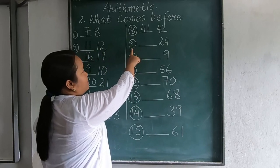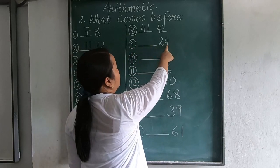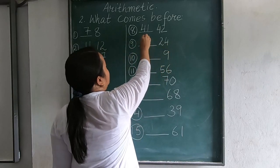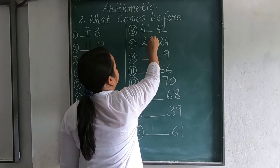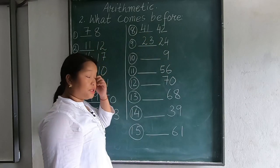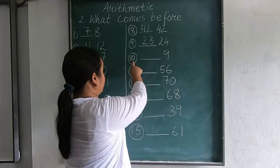Then next is question number 9, 24. Before 24, there is 23.